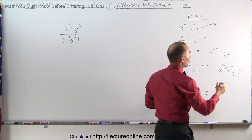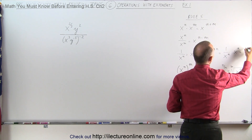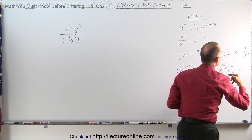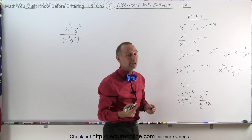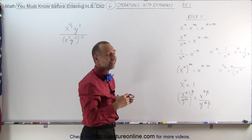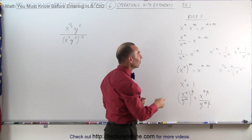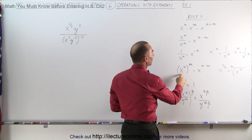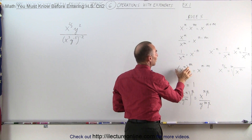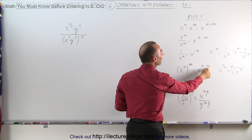One more rule: x to the n can be written as 1 over x to the minus n. Whenever you move from the denominator to the numerator, or from the numerator to the denominator, the sign of the exponent changes. Also, if you have an exponent raised to another exponent — x to the n raised to the m power — this is equal to x to the n times m.